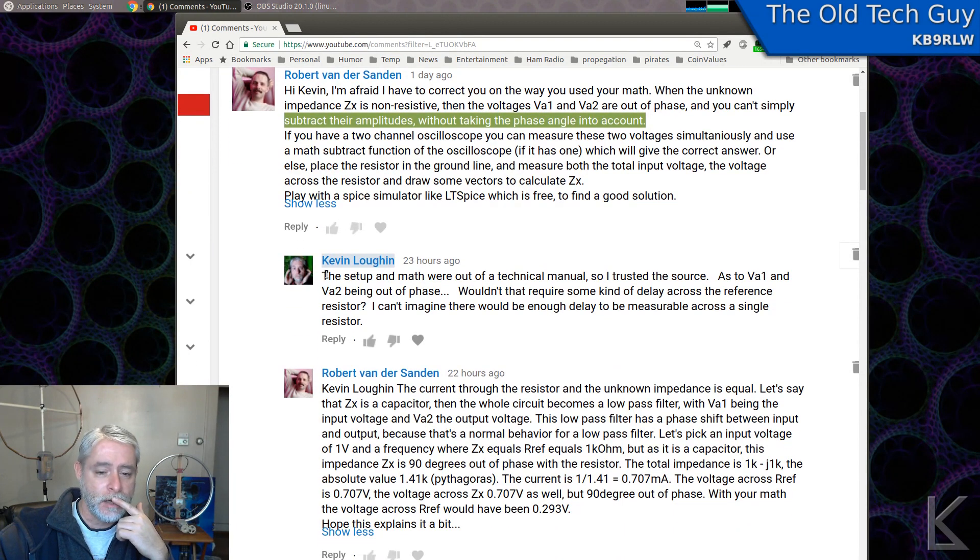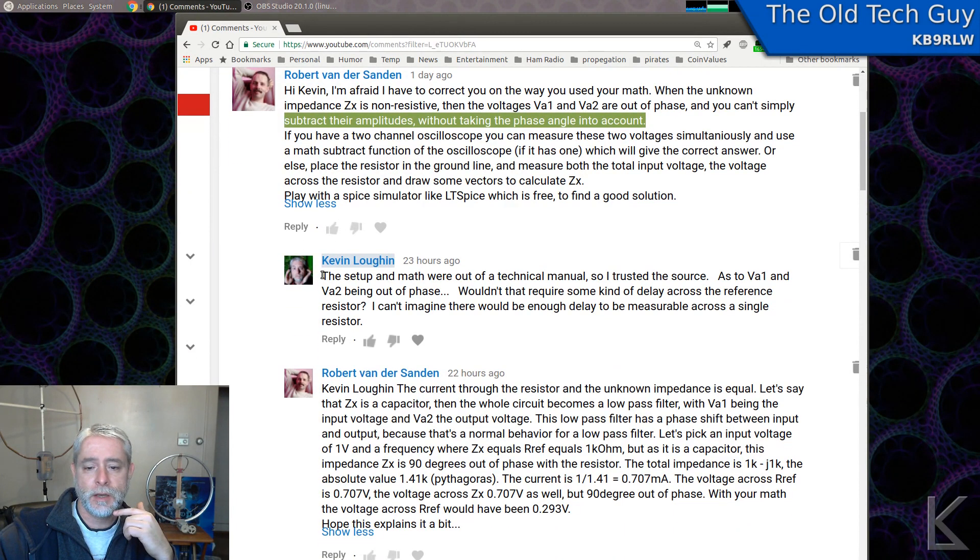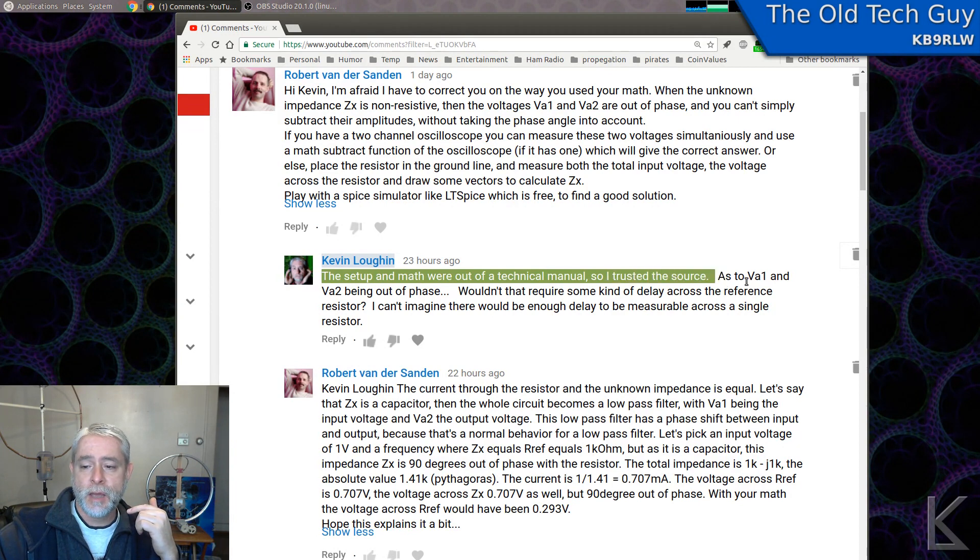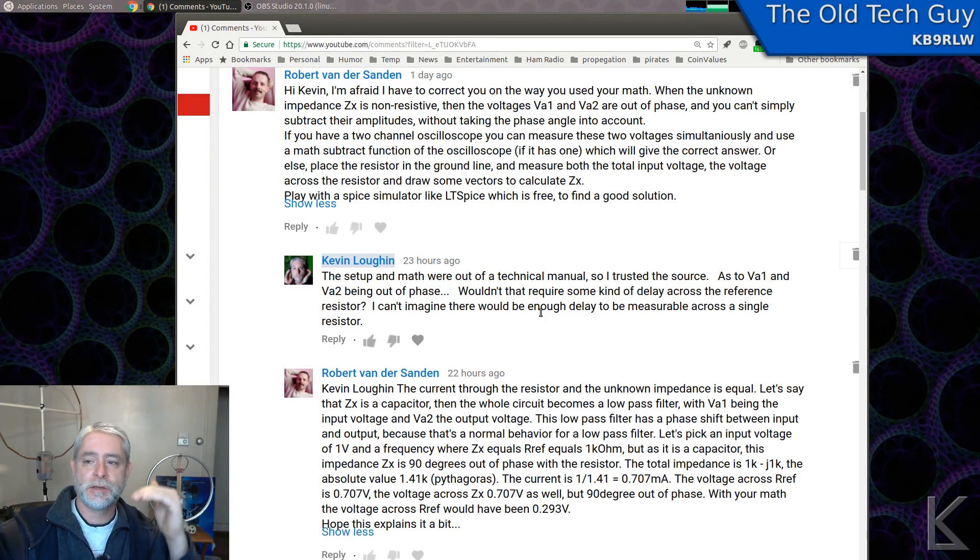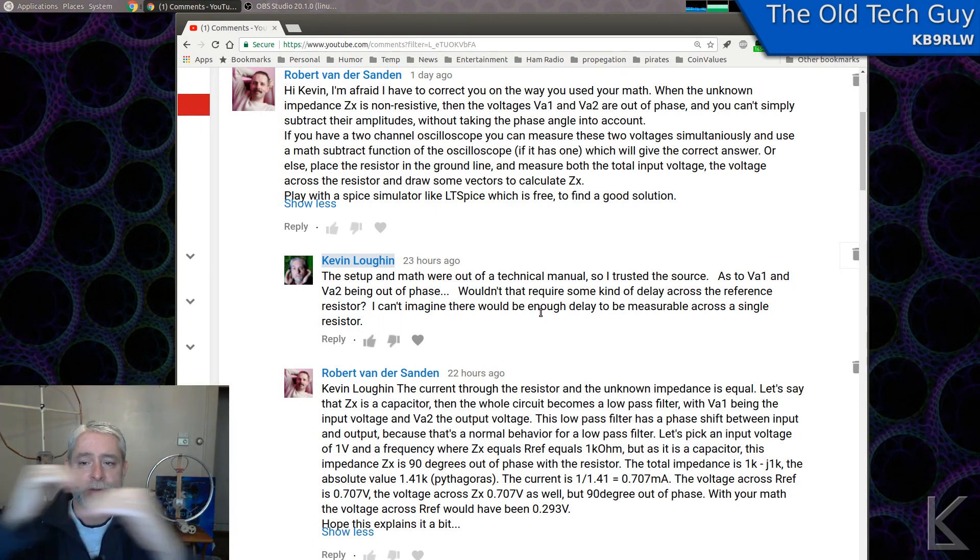Now I responded to him here. The setup and math were out of a technical manual, so I trusted the source. As to the VA1 and VA2 being out of phase, wouldn't that require some kind of delay across the reference resistor? Because I can't imagine how the signal on one side of the resistor and the signal on the other side of the resistor could be out of phase. I just couldn't imagine how that could be.